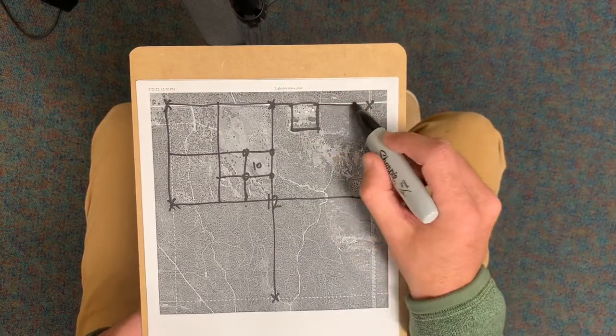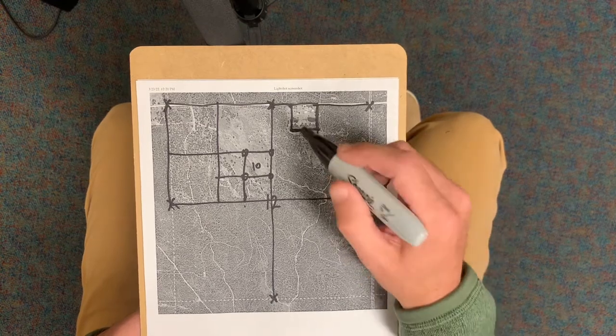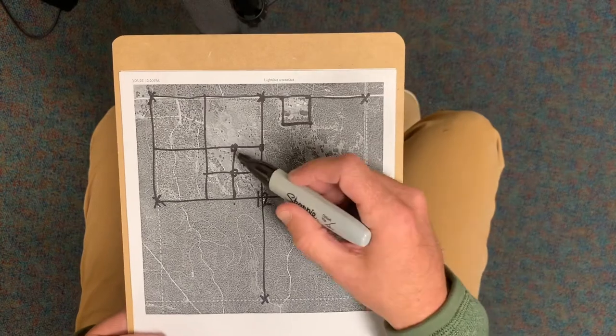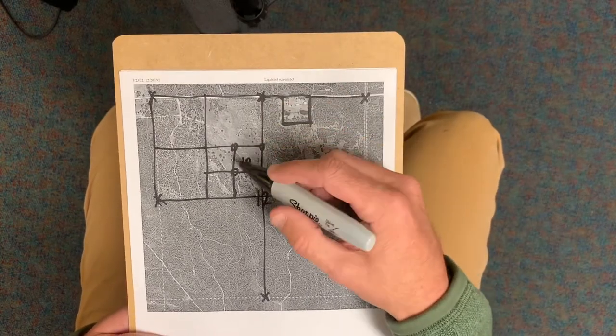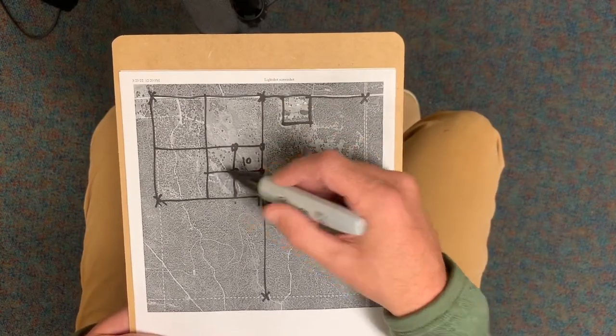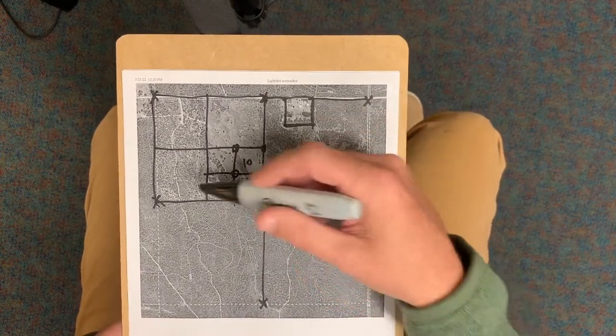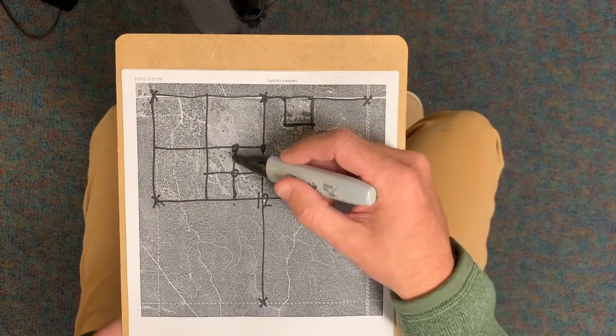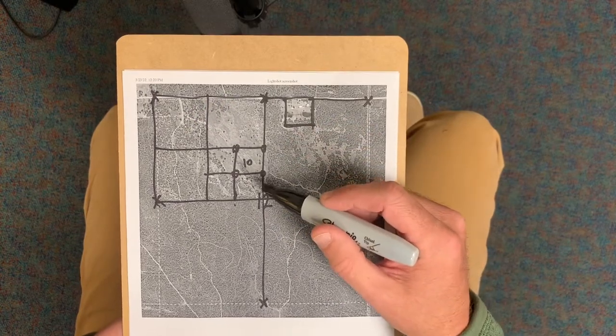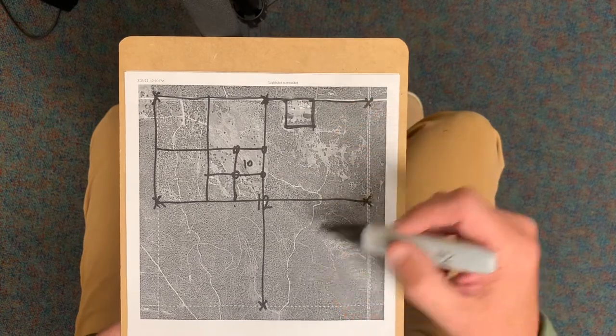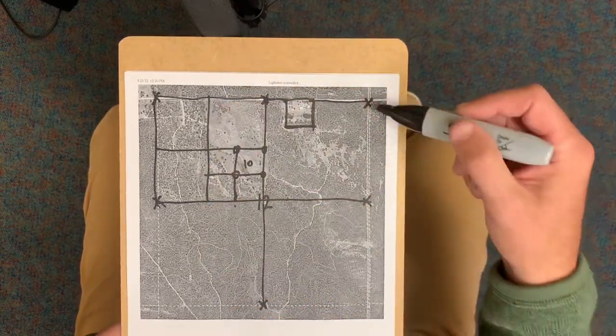And all of that is just dependent upon how the descriptions are written. So we have aliquot description, and that is just a natural subdivided description, the natural portion of a subdivided section. And that was real popular, has been real popular since statehood because in the public land survey system with these square sections like this.